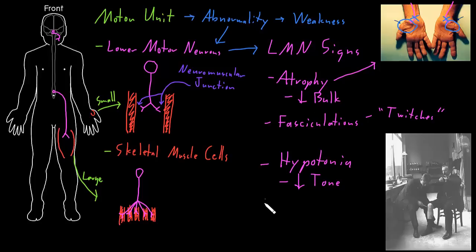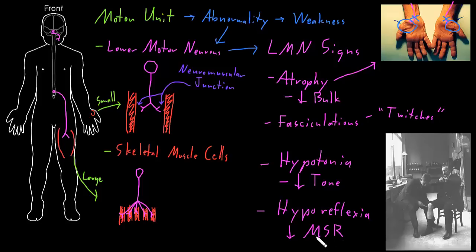Another lower motor neuron sign is called hyporeflexia, which refers to decreased muscle stretch reflexes. This is a reflex that happens if you rapidly stretch a skeletal muscle, like if you hit the tendon of the muscle with a little rubber hammer, as this doctor is doing to this patient right here. I'm going to do a different video on the muscle stretch reflexes, and in that video we'll talk about why the reflexes can decrease with problems of the lower motor neurons, because that one we understand pretty well.